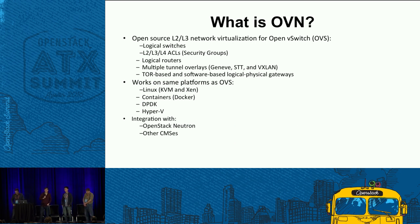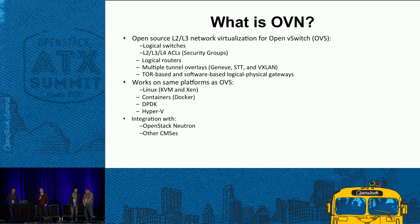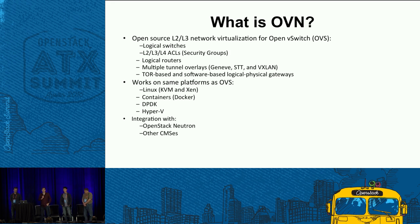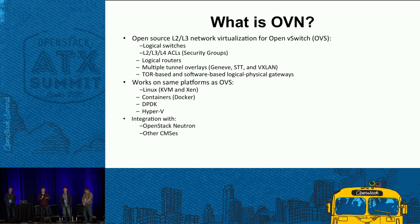OVN provides what you'd expect from network virtualization: you can create logical switches, logical routers, security groups, and ACLs from L2 through L4. We support multiple tunnel overlays because they have various tradeoffs, so we like to give people options. We've also provided the ability to have OVN control top-of-rack switches so you can more easily integrate physical workloads into your logical workloads, working with a number of hardware providers.